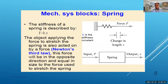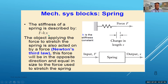For a spring, the stiffness equation is: force equals K — the spring stiffness constant — multiplied by displacement x. Force is directly proportional to displacement. This is one building block of the system. The object applying the force to stretch the spring is also acted on by a force in the opposite direction and equal in size — that is Newton's third law. So f = Kx, meaning force can be calculated from output displacement.